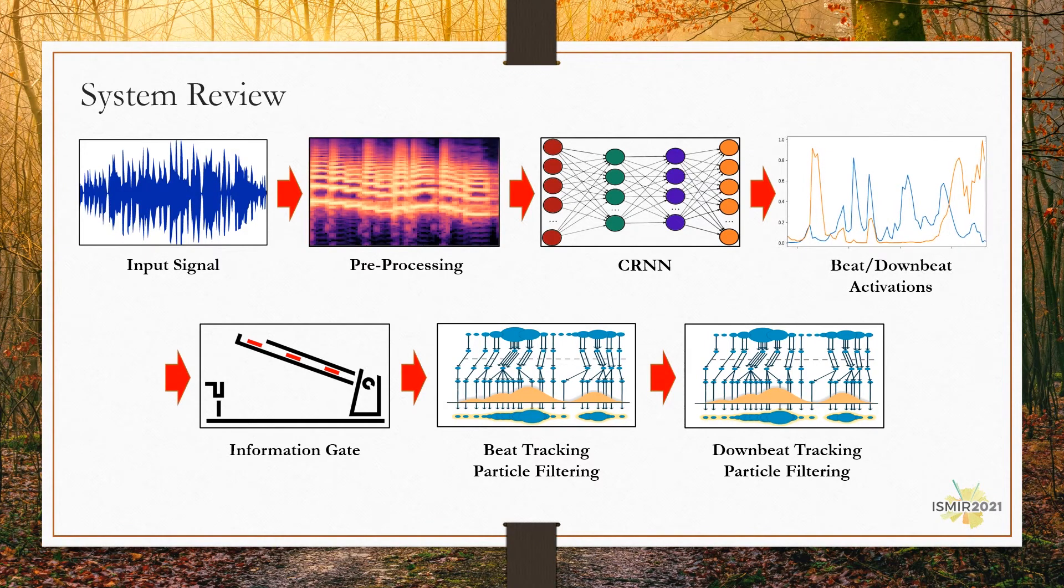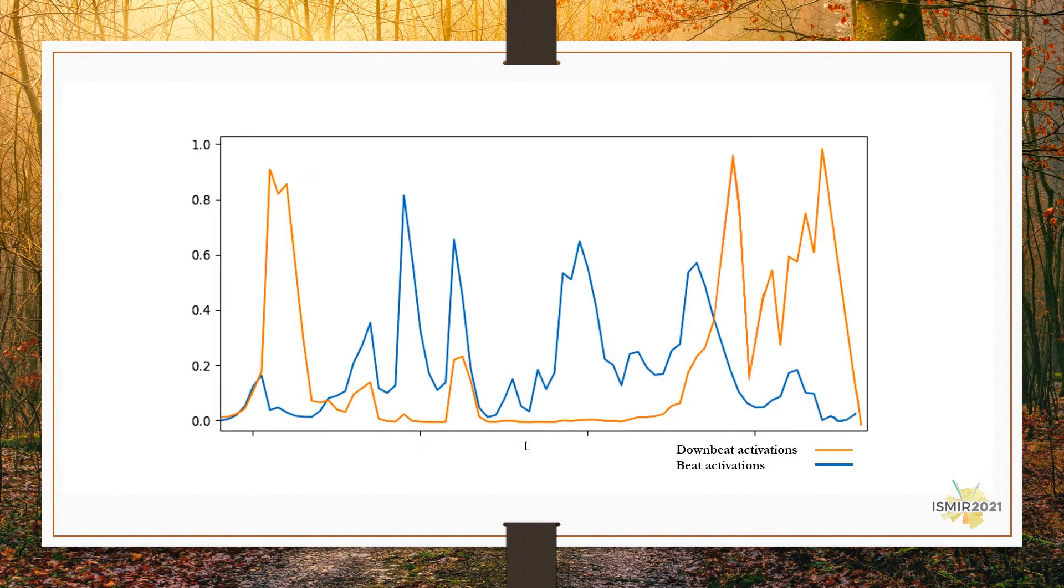Next, the beat and downbeat activations are fed into the inference module. The inference module includes the proposed information gate and a cascade of two-stage particle filtering, one for beat tracking and the other for downbeat and meter tracking. Let's take a look at the input. The inference input is beat and downbeat activation. The beat tracking module is expected to infer the correct beat positions and the downbeat tracking block detects the downbeats out of the inferred beats.